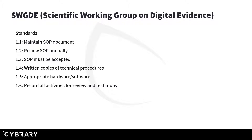SWGDE — as we talked about in the pre-assessment — stands for Scientific Working Group on Digital Evidence. There are several standards involved. They require organizations conducting forensic examinations to maintain an SOP document and review it annually. It has to be accepted by the general forensic community. Written copies of technical procedures are needed as well. Appropriate hardware and software must be used — not just made-up software, but tools generally accepted or approved by the forensic industry. And all activities must be recorded for review or testimony if presented in a court of law.